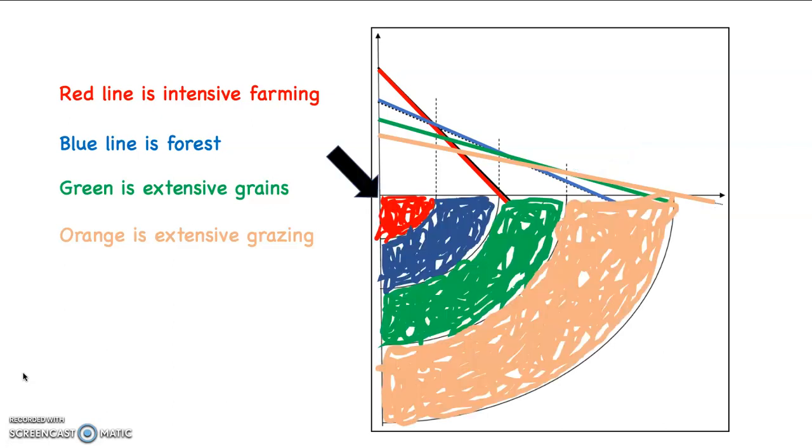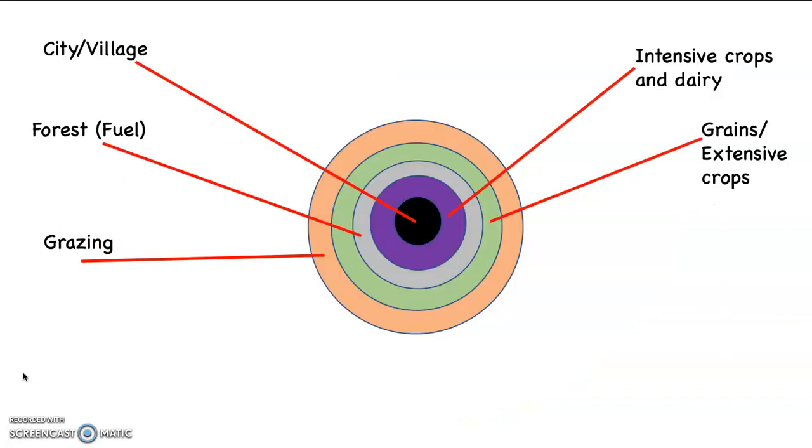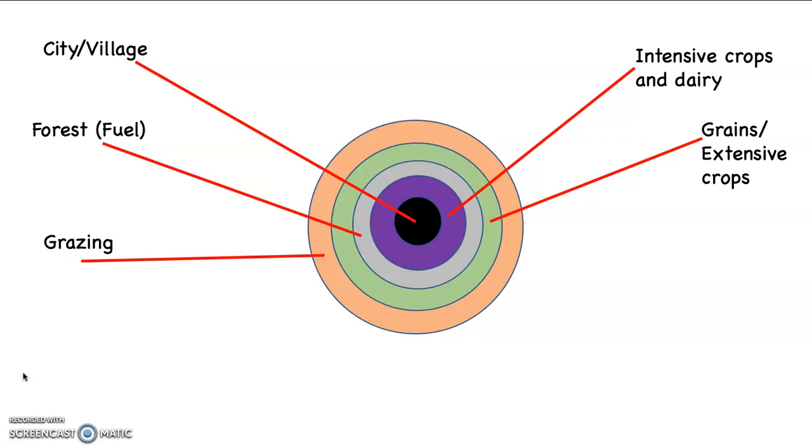And so if I fill it all in, you can see once again, the black arrow's pointing where the city is. And you can see the way the circles get drawn around the city based on profitability. And of course, a combination of how much it costs to produce something and how much it costs to transport it. So again, you can see there's the city in the middle, the intensive agricultural products and the dairy products, followed by the forest, followed by the grains and extensive crops, followed by the grazing.